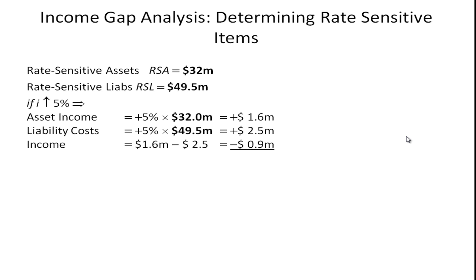Suppose the rate-sensitive assets (RSA) for a financial institution happen to be $32 million, and their rate-sensitive liabilities (RSL) are $49.5 million. What happens if interest rates go up by 5%? Asset income goes up by 5% times $32 million, so the institution takes in $1.6 million more in interest income.